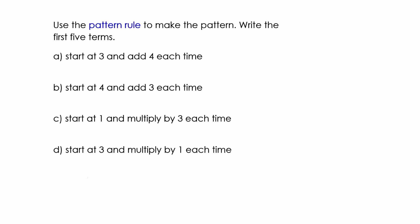So use the pattern rule to write the next five terms. Start at three, add four each time. Start at four, add three each time. Start at one, multiply by three each time. And the last one, start at three and multiply by one each time. When you multiply a number by one, you get the same number.